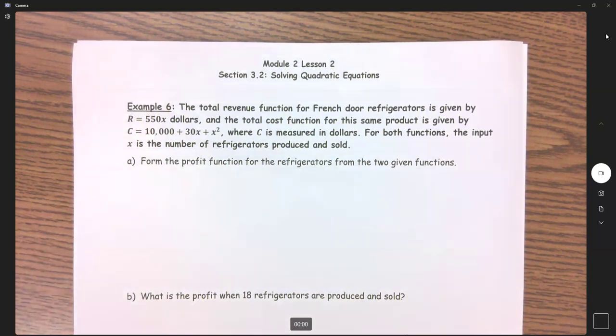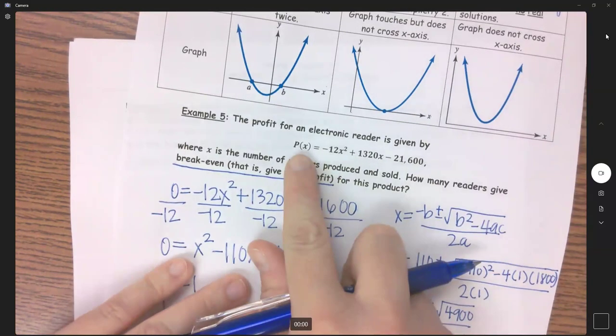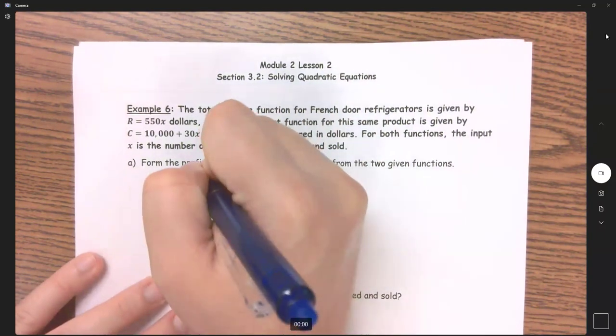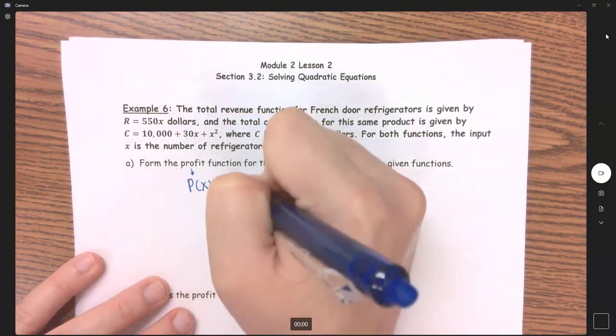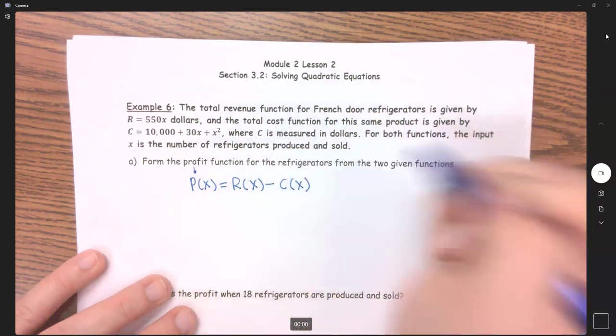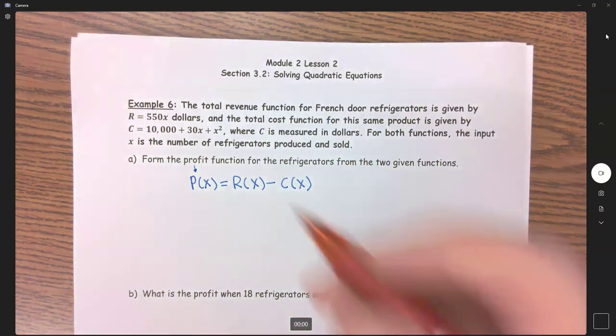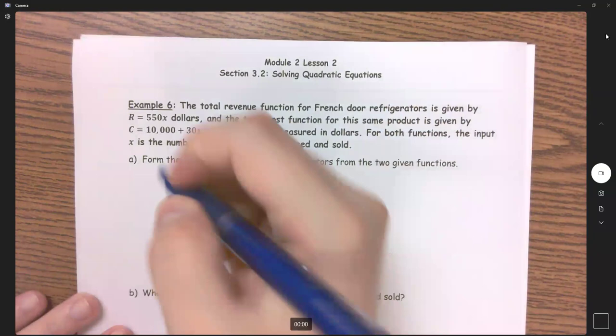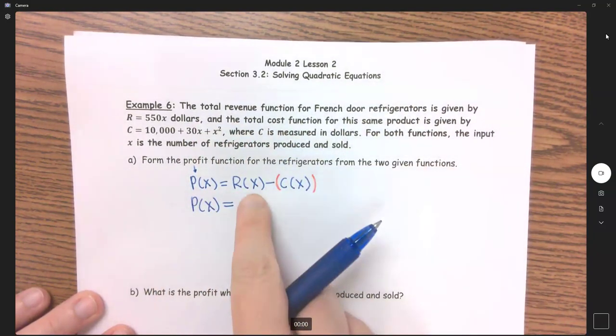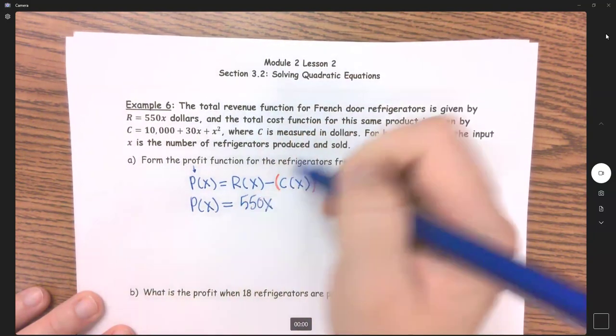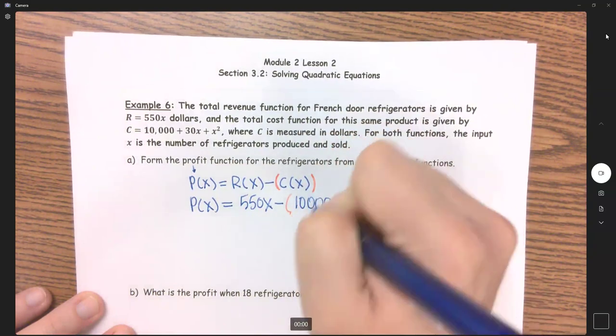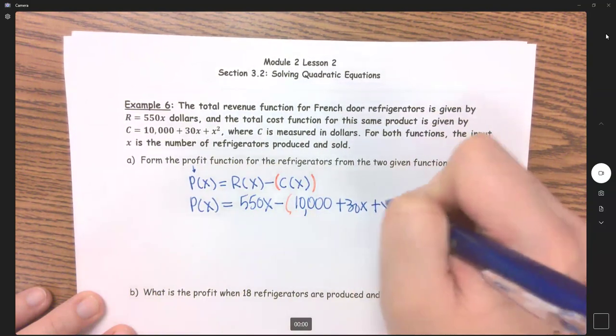So we need to form a profit function. In our last example, we were given that profit function, but this time I am told what my revenue equals and what my cost equals, and we can use that to find our profit. So profit equals my revenue minus my cost. Now we have to remember when we are subtracting our costs, we are subtracting the entire function. We need to put that in parentheses. So we will have P of X equals my revenue, which is 550X, minus the entire function of my cost, which is 10,000 plus 30X plus X squared.